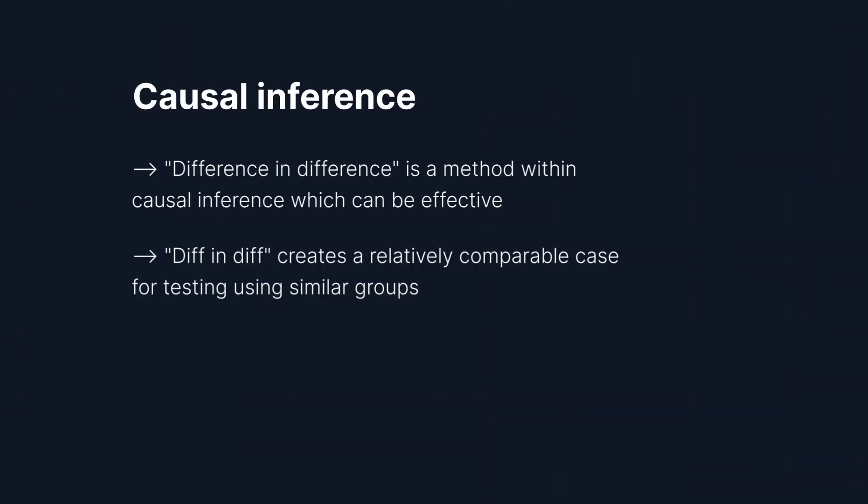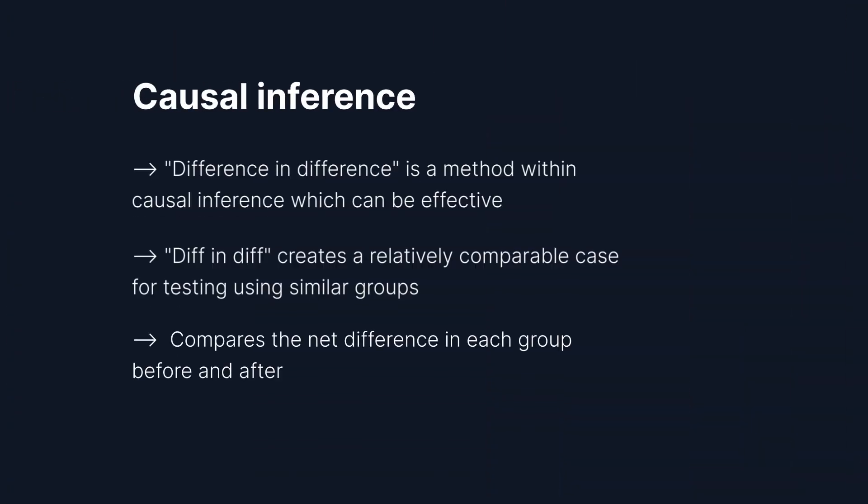But besides that, if we have to choose a different option, I would recommend causal inference. For example, difference-in-differences would be a popular option. What it does is basically create a relatively comparable case. For example, for our email campaign testing, if we're going to do the difference-in-differences scenario, then we would probably choose to launch the new campaign in, let's see, Canada.